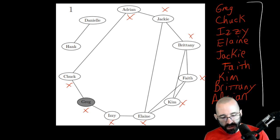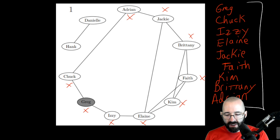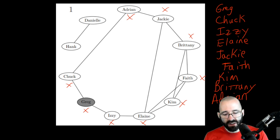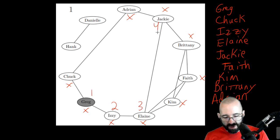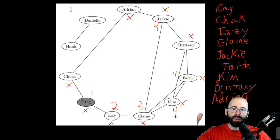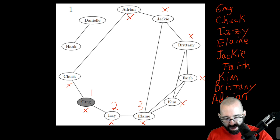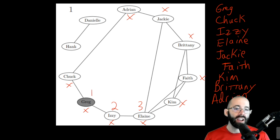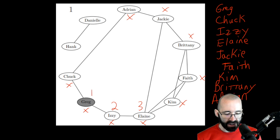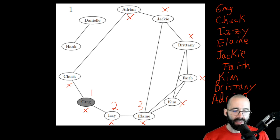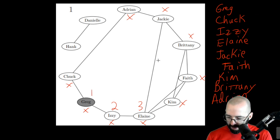You can see the order through which we traversed the graph, and it's very different from breadth-first. First we did Greg, next Izzy, then Elaine, and then Jackie, Faith, and Kim were all added after that. You can really see that depth-first path going down. You can definitely see the difference between breadth and depth — it is what it sounds like. You can compare the traversal order with the breadth-first result.